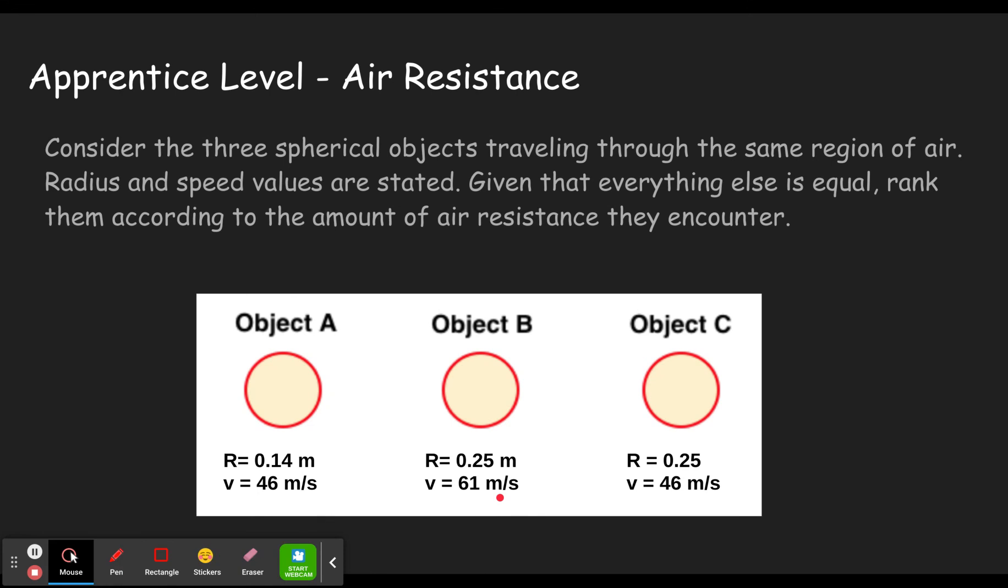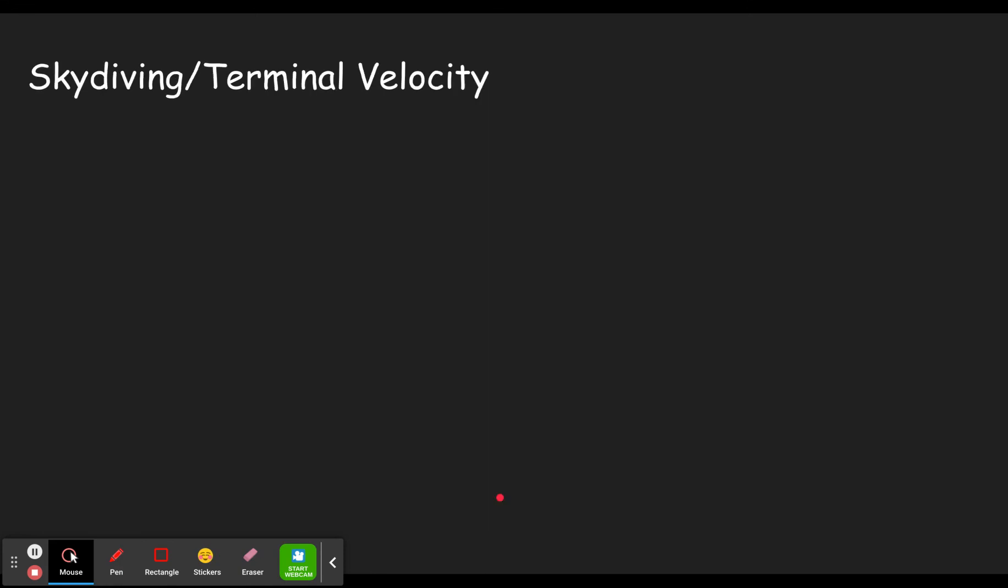Let's move on to the middle level. So now we're going to learn about something called terminal velocity. Terminal does not mean you're going to die. It just means the end. In this case, it's the end of a changing velocity. Let's take a look at what happens here as a skydiver falls out of a plane.